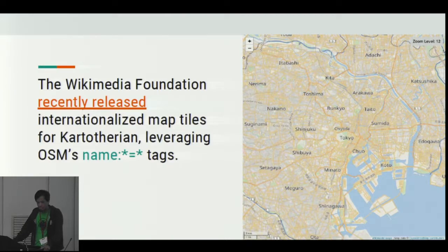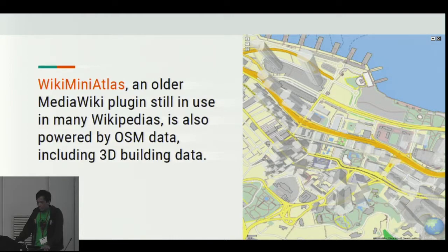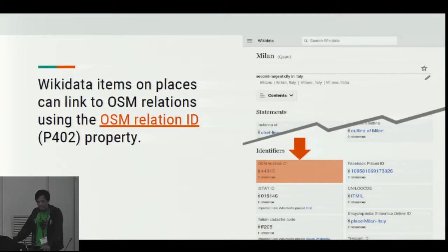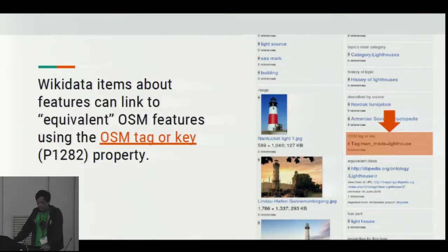This leverages OSM's name tags in different languages — here you can see a map of Tokyo using English language tags. Wikimedia Atlas, an older media plugin still in use in many Wikipedias, is also powered by OSM data, including 3D building data — here's a dynamic map showing 3D building data in Hong Kong. Wikidata items and places can link to OSM relations using the OSM relation ID property. Similarly, Wikidata items about features can link to equivalent OSM features using the OSM tag or key property — for example, a Wikidata item for a lighthouse links to the OSM tag man-made equals lighthouse.